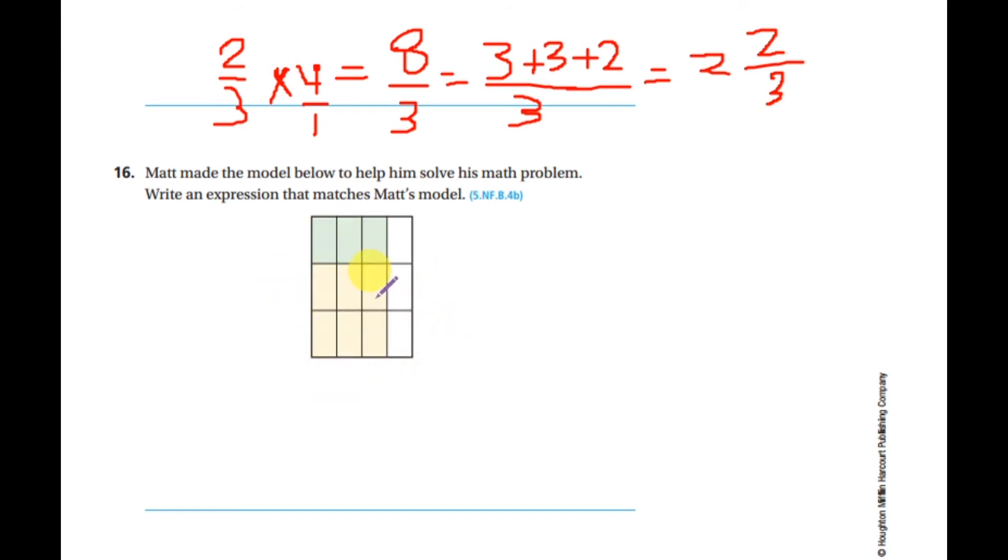So first I can imagine that he colored the three parts here. So the three parts here are three out of how many bars? Out of four.